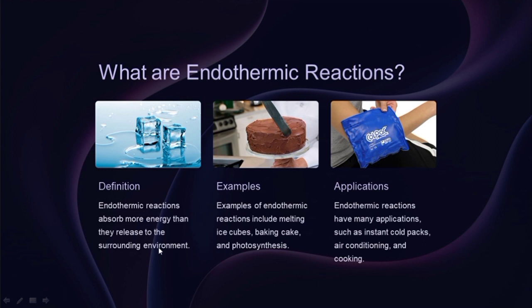The second example of endothermic reaction is baking cake. In the case of baking cake, it absorbs energy, because baking cake is formed from baking soda plus vinegar to give carbon dioxide and water (H2O). So baking cake absorbs energy. The first one is melting ice and the second one is baking cake.